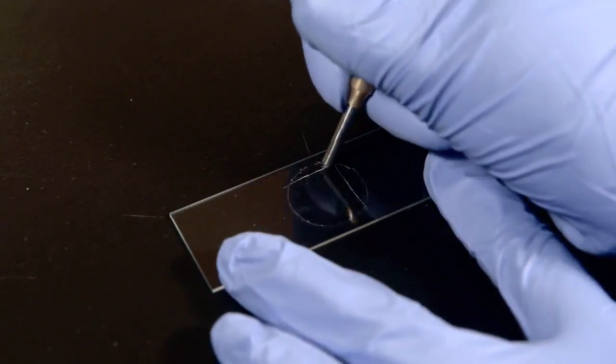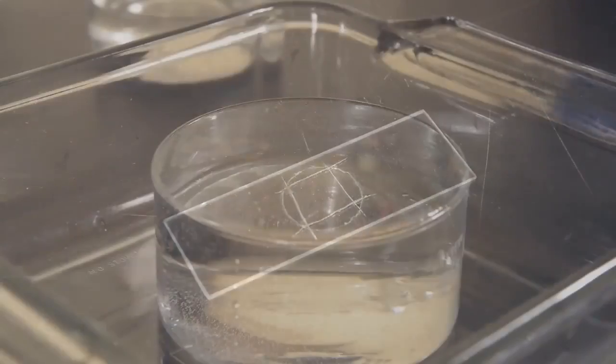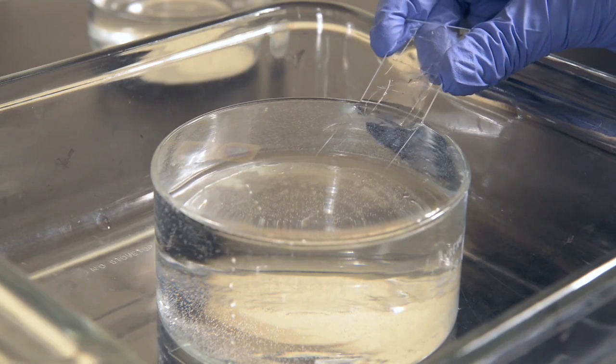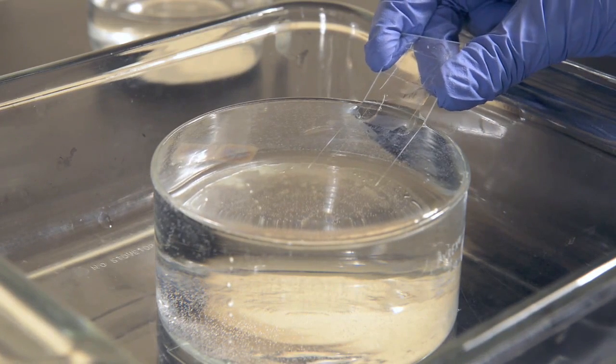If the patterned film is good, score the edges of the patterned area. Breathe onto the glass slide and float the film onto the surface of water in a glass crystallization dish.